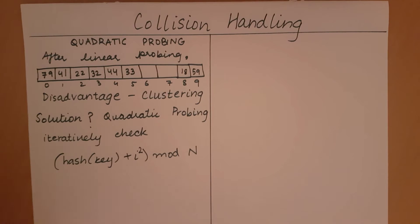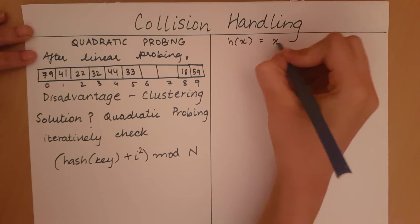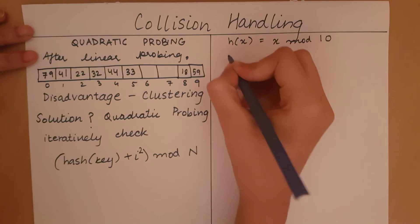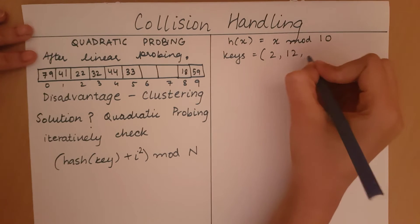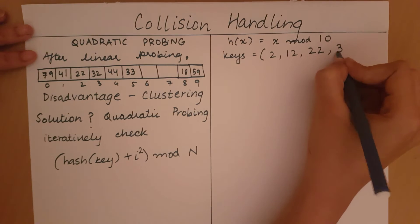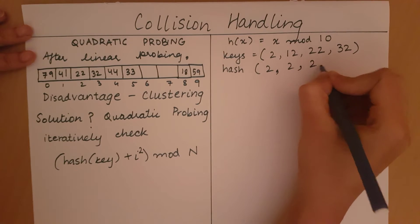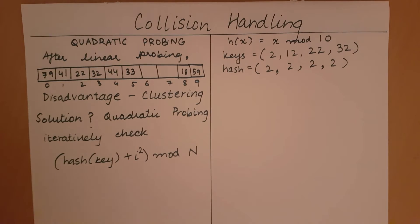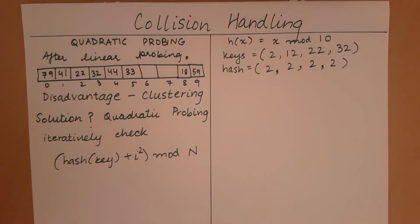All the algorithms and everything is going to be the same, but instead of hash(key) + i, we will say hash(key) + i². So let's see an example of quadratic probing. Let's say my hash function is going to be x mod 10, and my keys will be 2, 12, 22, and 32. As you can see, my hash values are all going to be equal to 2. In linear probing you would expect all those values to cluster around index 2 and its consecutive cells, but let's see how it's going to change for quadratic probing.